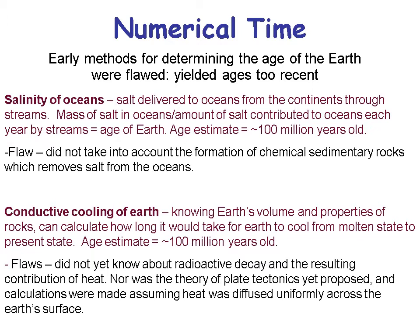Another numerical time method that didn't work was conductive cooling of the Earth: knowing Earth's volume and rock properties, you could calculate how long it would take to cool from a molten to present state. The flaw was they didn't know about radioactive decay and its contribution of heat inside the Earth. The theory of plate tectonics had also not been proposed, so calculations assumed heat diffused uniformly across Earth's surface, which we know is not true.